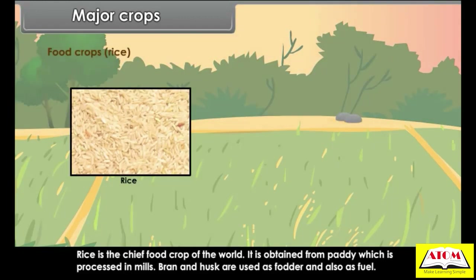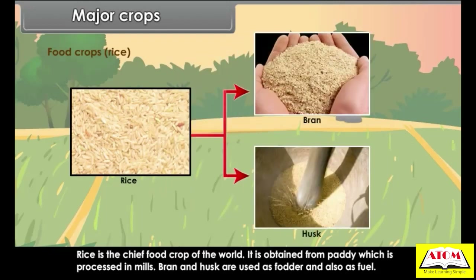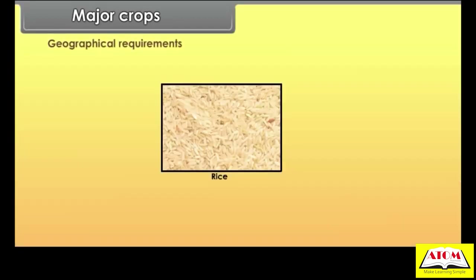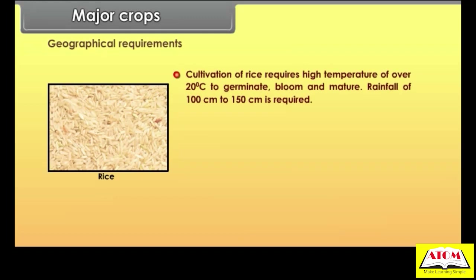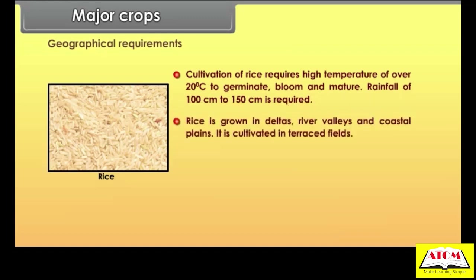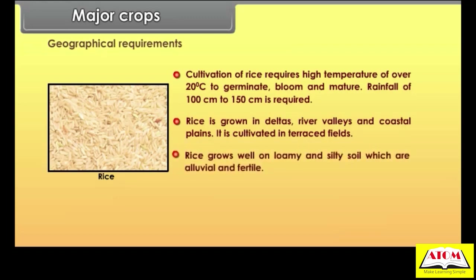Rice is the chief food crop of the world. It is obtained from paddy which is processed in mills; bran and husk are used as fodder and also as fuel. Geographical requirements: cultivation of rice requires high temperature of over 20 degrees Celsius to germinate, bloom and mature. Rainfall of 100 to 150 centimeters is required. Rice is grown in deltas, river valleys and coastal plains, cultivated in terraced fields, and grows well on loamy and silty alluvial soil.